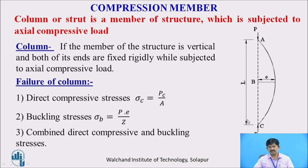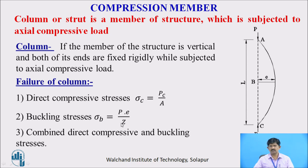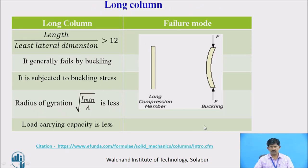How does the failure of a column take place? It takes place either by direct compressive stress, which occurs in case of a short column — that is, sigma c is equal to Pc upon A, meaning compressive stress equals compressive load divided by cross-sectional area — whereas a long column fails by buckling stress, that is, sigma b equals P times e divided by Z, where e is the eccentricity and Z equals I by Y. Some columns may fail with the combined effect of direct compressive and buckling stress.